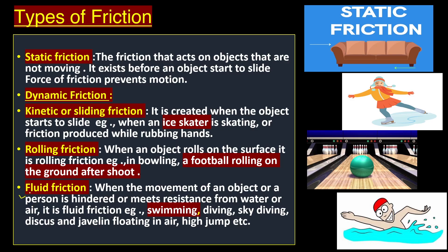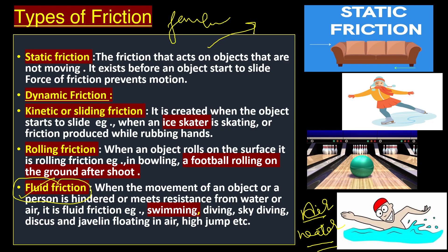The third type is fluid friction: the movement of an object or person is hindered or meets resistance from water or air. Fluid friction includes both air resistance and water resistance. For example, a swimmer moving through water experiences fluid friction. When Neeraj Chopra threw the javelin through the air, air resistance also acted on it — that air resistance is also a form of fluid friction.